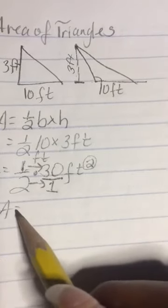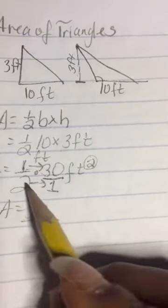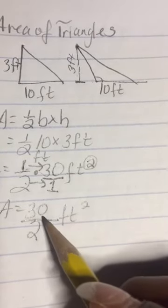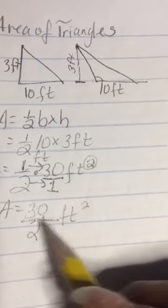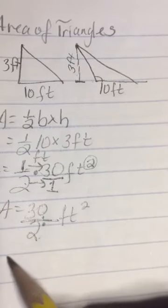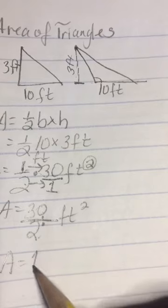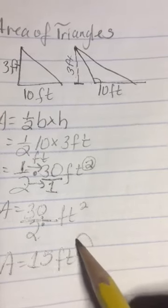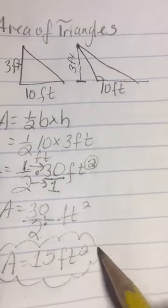1 times 30 is 30. 2 times 1 is 2. So this is still 30. Remember the fraction line is an abbreviation of division. 30 divided by 2 is 15. So the area is 15 feet squared.